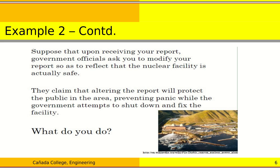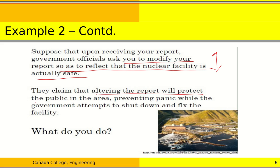You find that if a leak does occur, both the ocean and the neighboring community will be at risk. You send your report to the government agency, and they ask you to modify it to say the nuclear facility is safe. Their stated reason is to prevent public panic, and they claim the government will fix the issues within that timeframe. Again, the question is: what should you do?